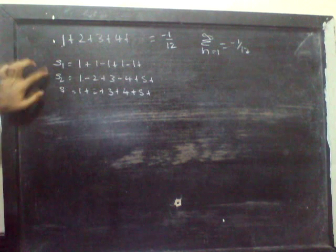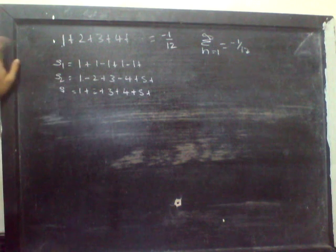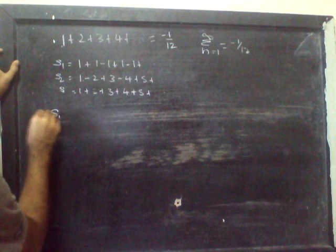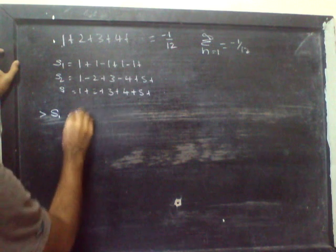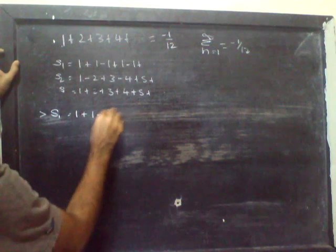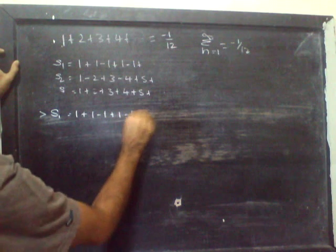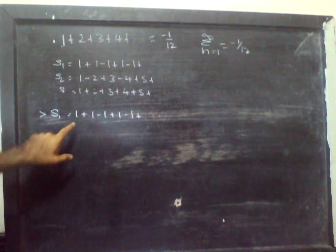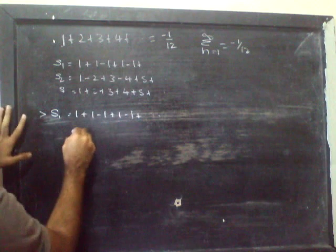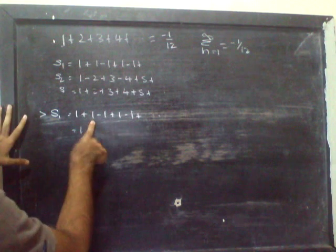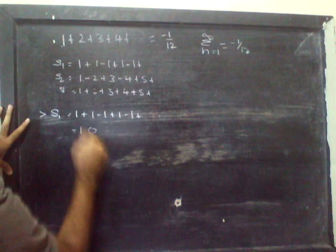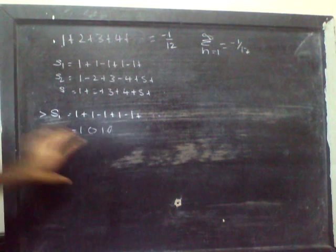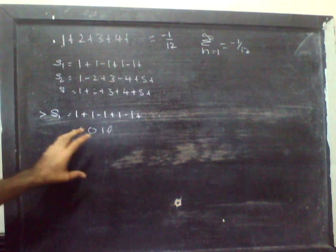Now I'll take this sum first, S1: 1 minus 1 plus 1 minus 1 and so on. So if you stop here, you'll get the answer as 1. If you go here, you'll get the answer as 0, 1, 0. So we don't know which number to take.